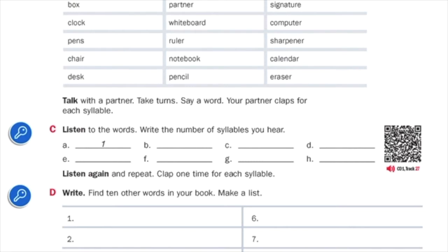If you have your book, turn to page 31. Look at Exercise C. Listen to the words, and then write the number of syllables you hear. Here's an example.